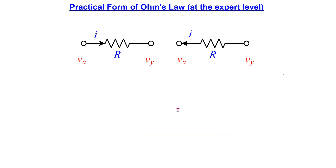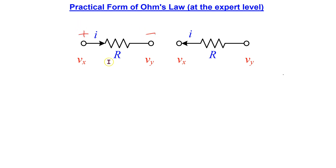Next, let's look at the practical form of Ohm's law often used in circuit analysis. Consider a resistor R that is part of some circuit causing the conventional current to flow from right to left. The voltage at one terminal of the resistor with respect to the circuit ground is Vx. Since conventional current flows from higher to lower potential, we can assign the voltage polarities as shown. Applying Ohm's law with passive sign convention, this current I is given by Vx minus Vy, divided by R — where Vx is the voltage at the plus side and Vy is the voltage at the negative side of the resistor.